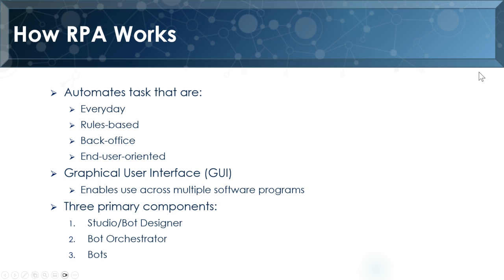RPA works best for tasks that are done frequently — every day, ideally — especially for your first project, where you want high payback. The process should be rules-based, meaning you can define the rules clearly. You can have exceptions, but you need to know exactly what happens in those exceptions. Typically these are back-office processes — accounting would be a good example — ones that are more end-user oriented and that end users frequently interact with.